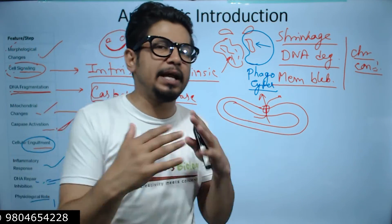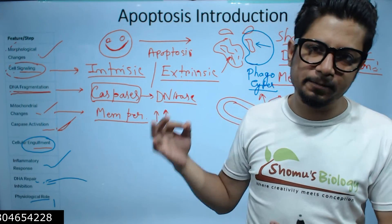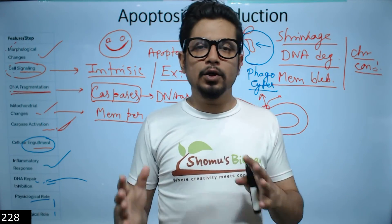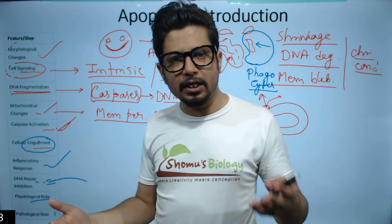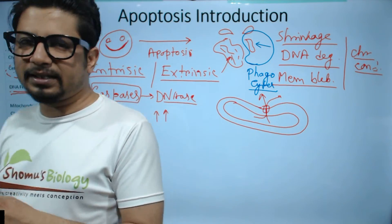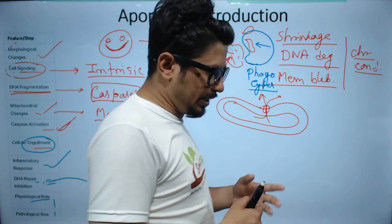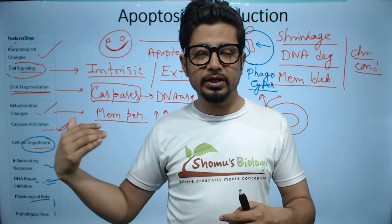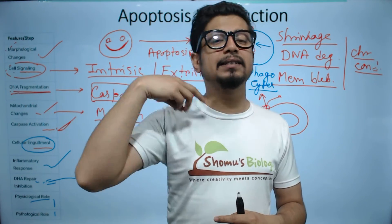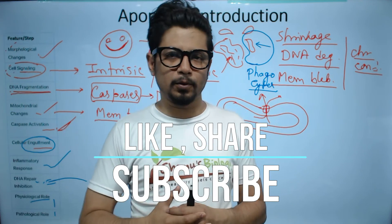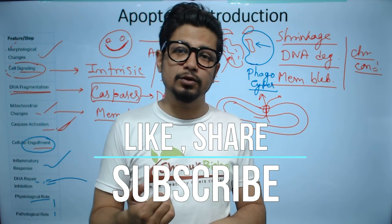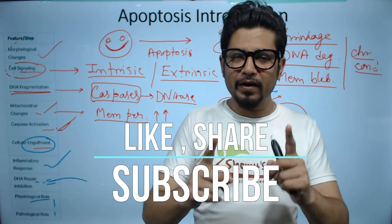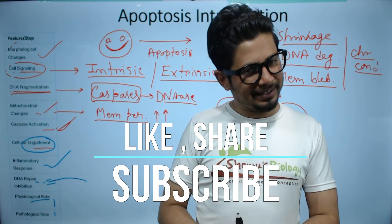That concludes our understanding of apoptosis: what it is, why it is important, and all the key aspects. If you like this video please hit the like button, share it with your friends, and subscribe for more videos. In the next lecture we are going to talk about the intrinsic pathway of apoptosis — how it originates inside the cell with mitochondria playing an important role. The third lecture will cover the extrinsic pathway, including the FADD (Fas-associated death domain) and Fas ligand-mediated pathway of apoptosis.